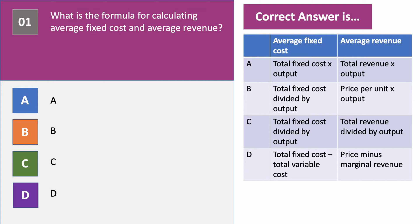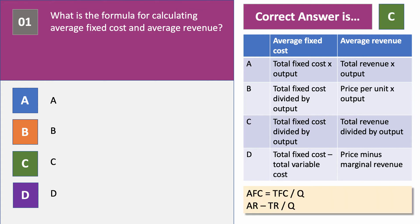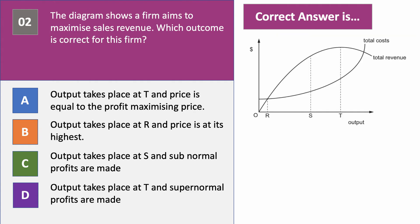The correct answer to question one is C. Average fixed cost is total fixed cost divided by output. Average revenue is total revenue divided by output — revenue per unit, or the price. Average revenue is essentially the demand curve. So the answer to question one is C.